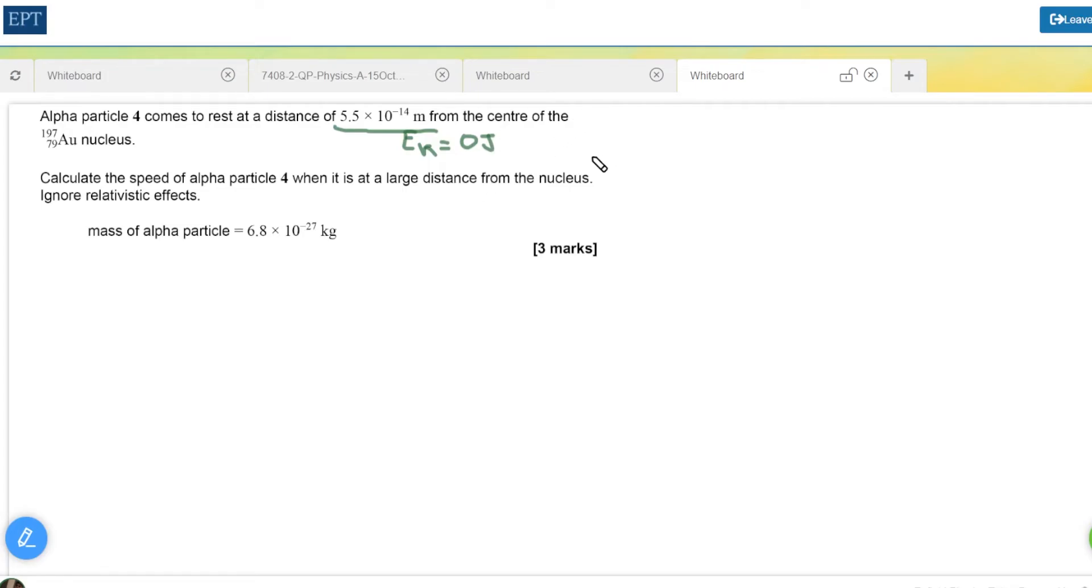The question is where has this kinetic energy gone, and of course it's gone into electric potential energy. Therefore we have an energy change here and we can say that the kinetic energy at some distance is equal to the electrical potential energy at this stopping distance. Therefore we can write down that half mv squared equals k q1 q2 over r.